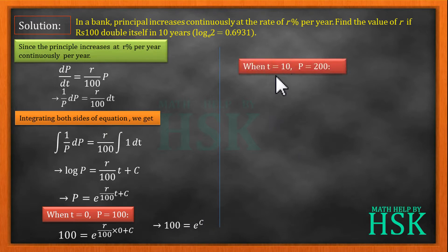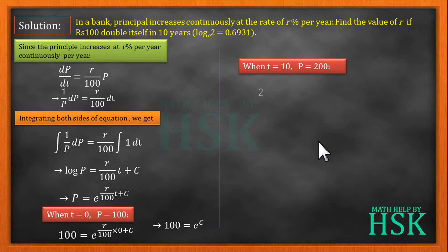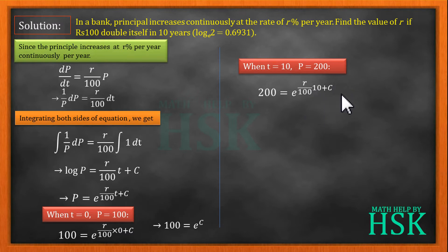Again, when time is equal to 10 — that is after 10 years — the principal doubles, so the principal becomes 200. Placing P = 200 and t = 10, we get 200 = e to the power of (r/100 · 10 + c).